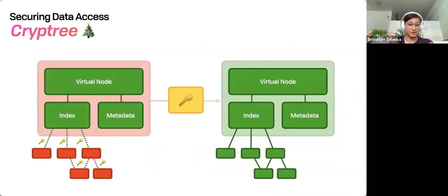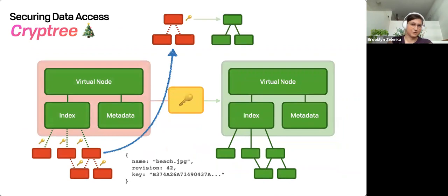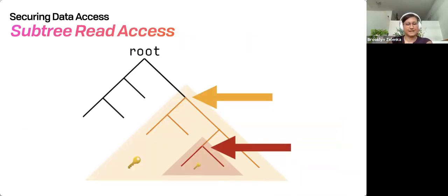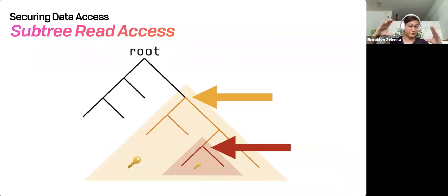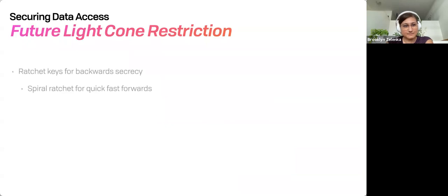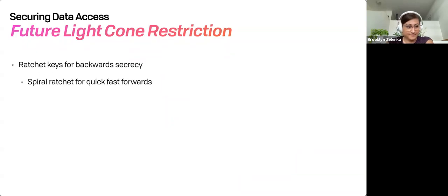We can rediscover the structure. We can decrypt it — we have this subtree access. So if I give the key for the red section, you can't read what's in orange. If you have orange, you can read red. So again, it's this exact same scoping mechanics. We also use ratchets — spiral ratchets — which lets us do quick fast-forwards. So every node gets, even in time, because we have this persistent structure, its own key, and that key is derived from the previous key.